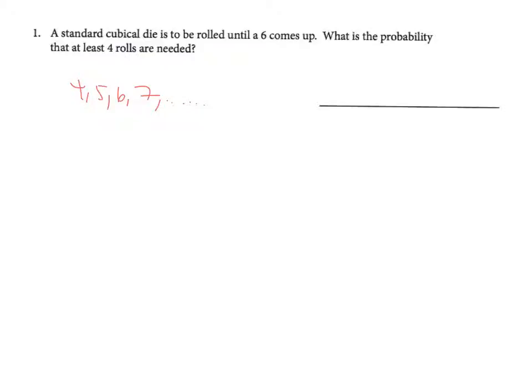Instead, I'm going to calculate the complement. The complement would be less than or equal to three rolls are needed. So if I take one and subtract the complement, I'm going to end up with the probability that I'm interested in.